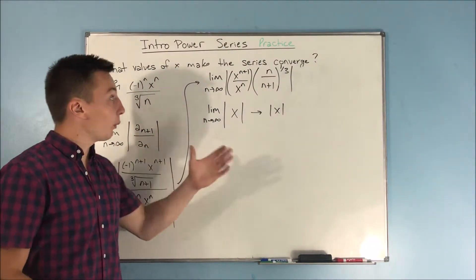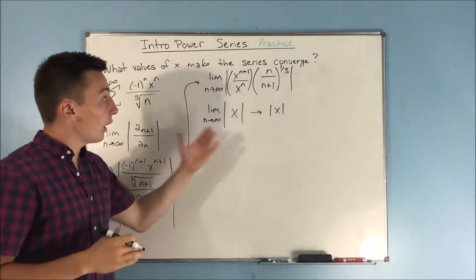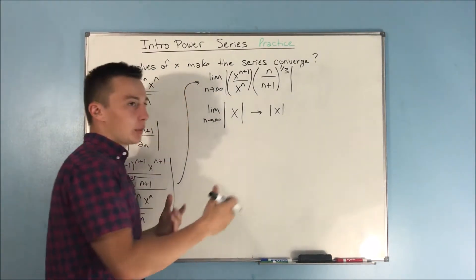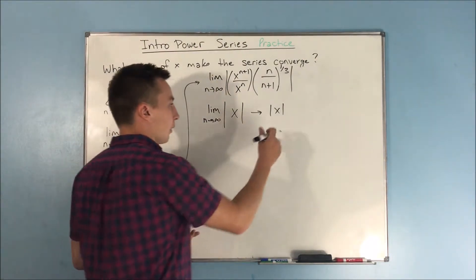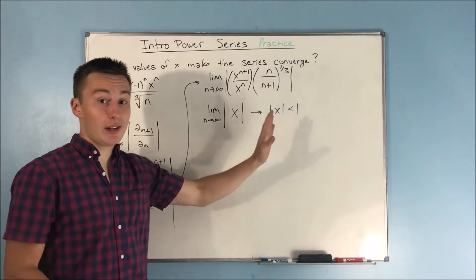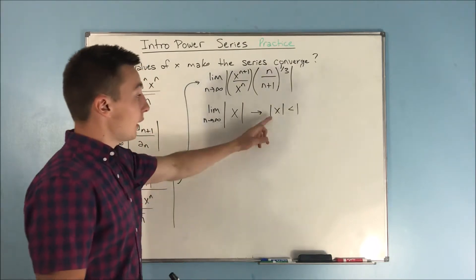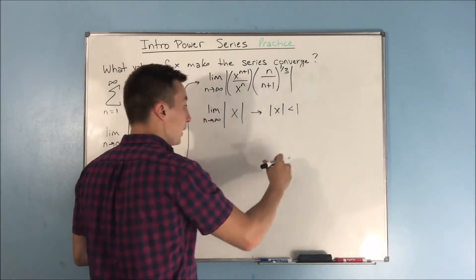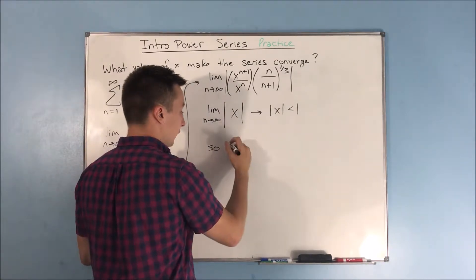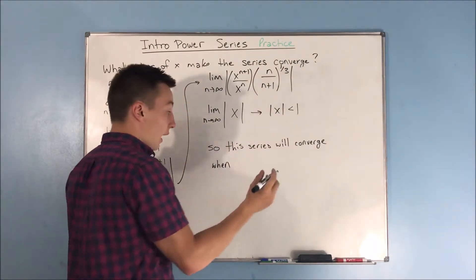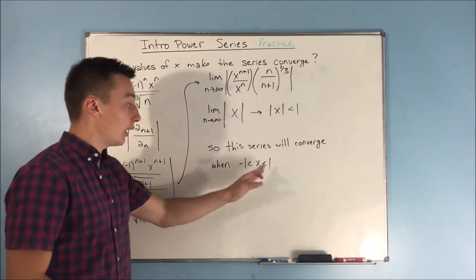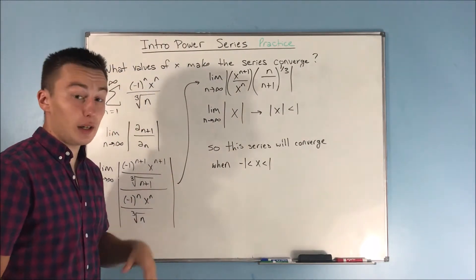We want to see what values of x make the series converge. The ratio test tells us it converges when the limit is less than 1 — in this case, when the absolute value of x is less than 1. We don't know about when the absolute value of x equals 1, so we have to test that later. But right now we know this series will converge when x is between negative 1 and 1.